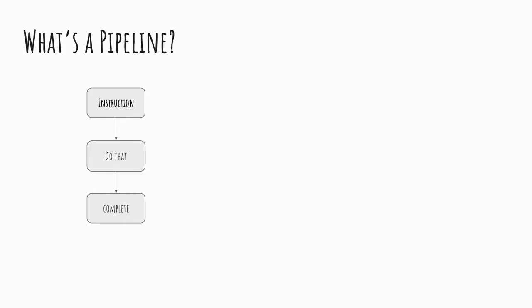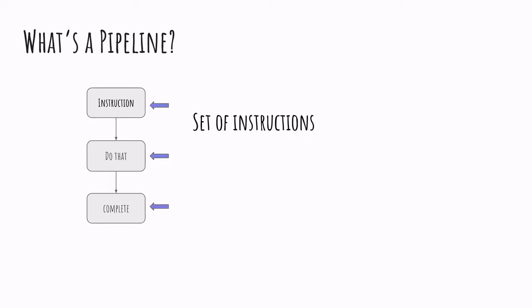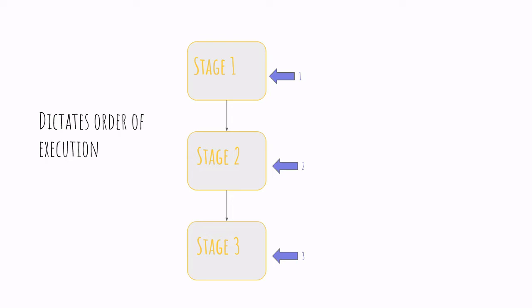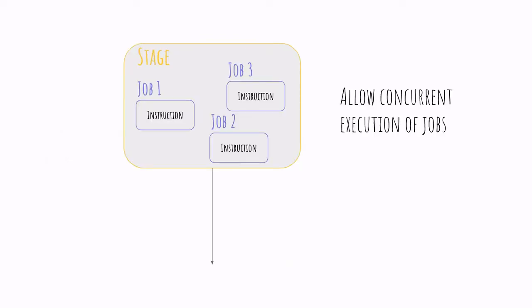Starting with a brief description on how to set up a pipeline: a pipeline is a set of instructions which are executed in an order that we define. Those instructions are part of what is called a job, and a job is classified in what is called stages. Stages have two important roles: they define the order of execution and they allow jobs within the same stage to run concurrently.